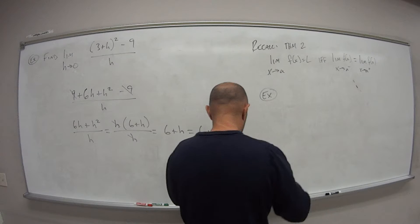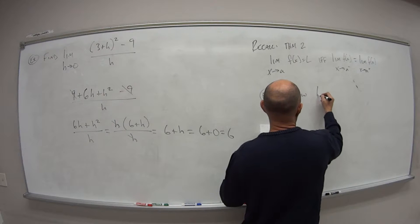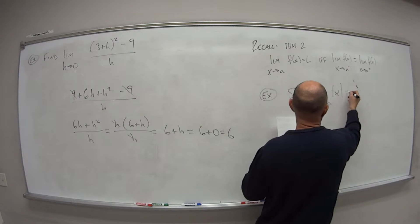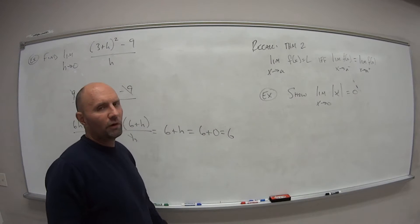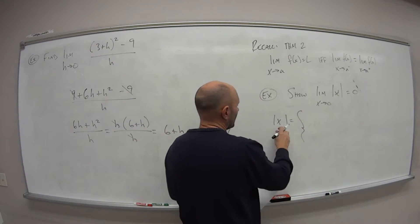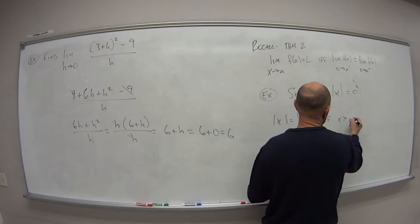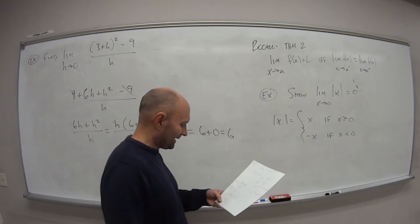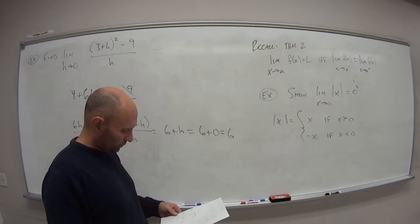So let's look at an example. Let's say we want to show that the limit of the absolute value of x as x approaches 0 is actually equal to 0. So recall in one of the first videos for this semester, we had the following. It was a piecewise function. Absolute value of x is equal to x if x is greater than or equal to 0, and it's equal to negative x if x is less than 0.